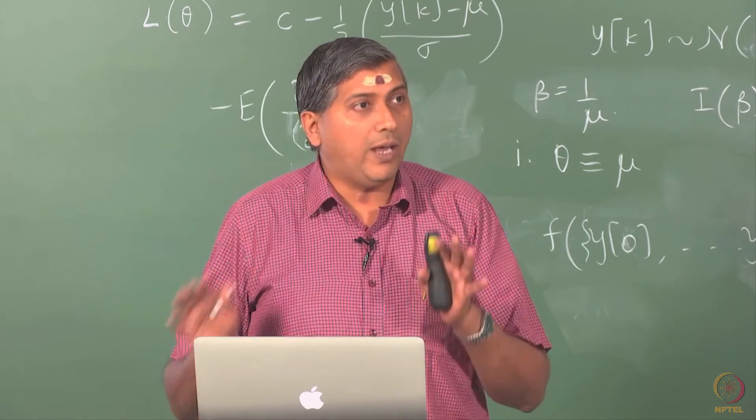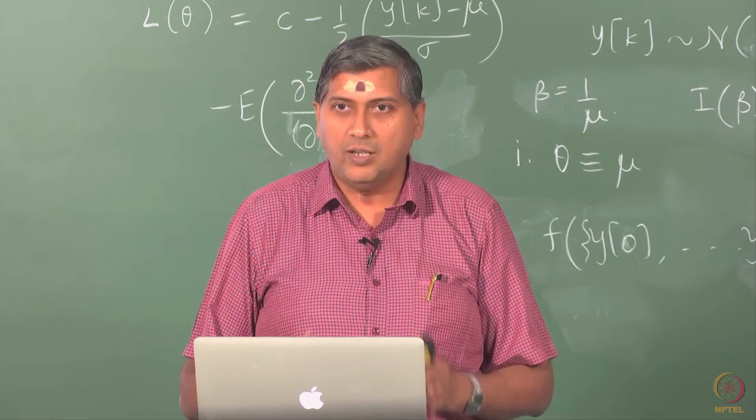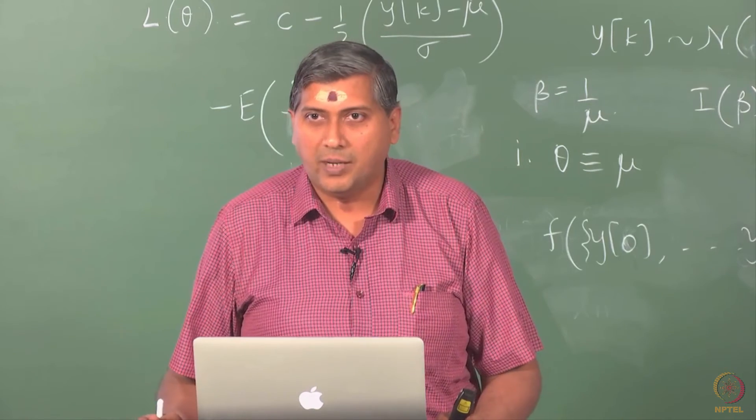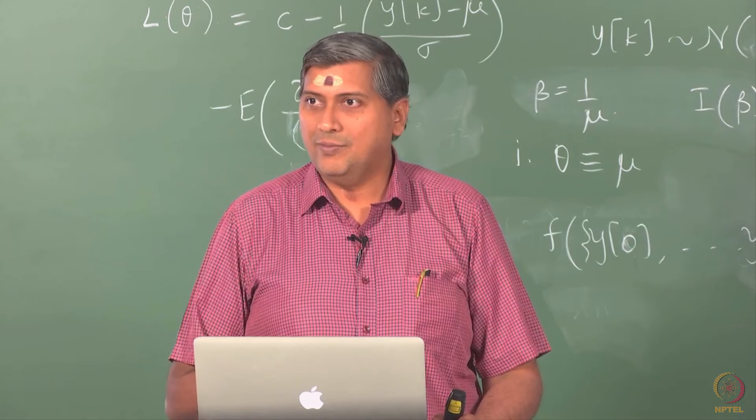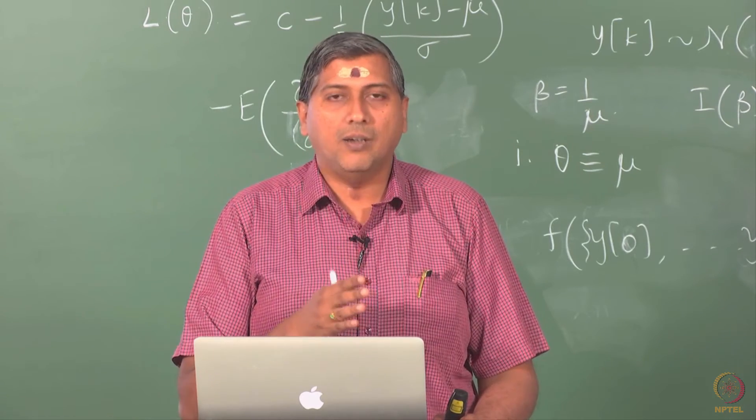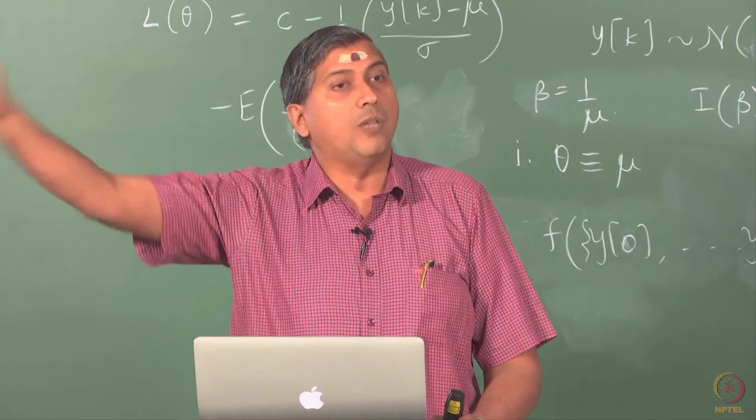When I can do that for an unbiased estimator, note carefully, when I can drive the variance to 0 for an unbiased estimator, we say that the estimator is consistent, meaning the sample mean or that estimate will converge to the truth.